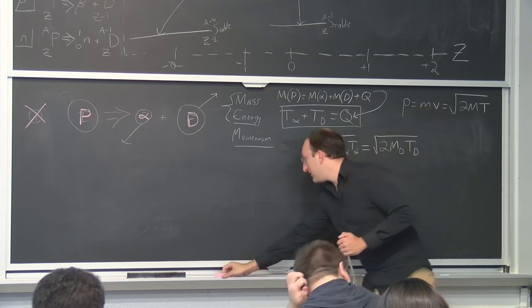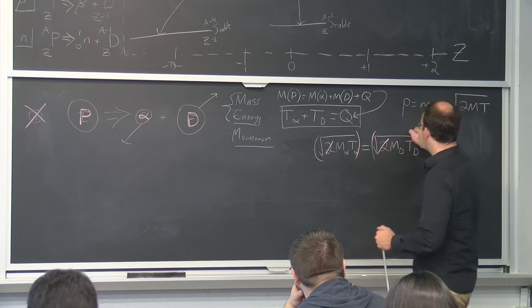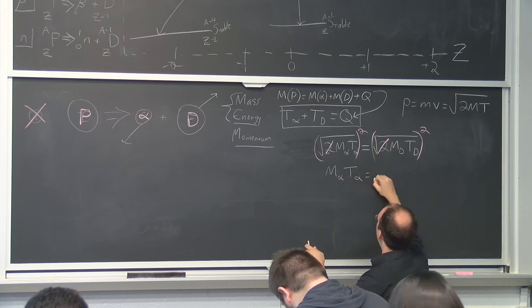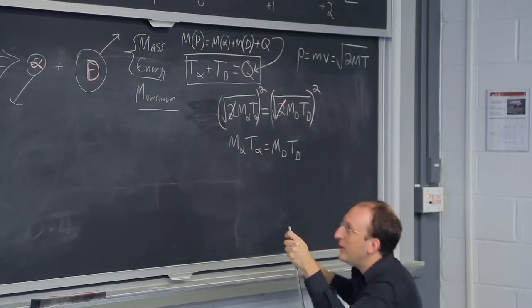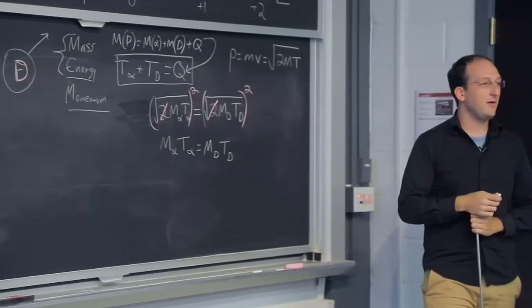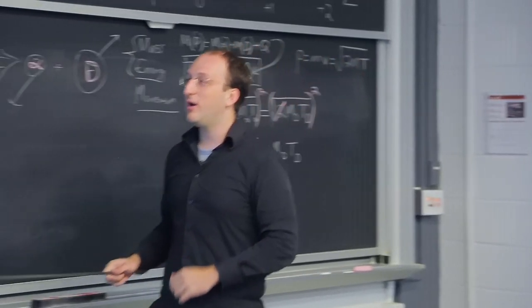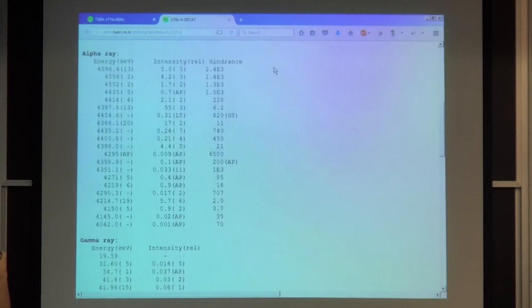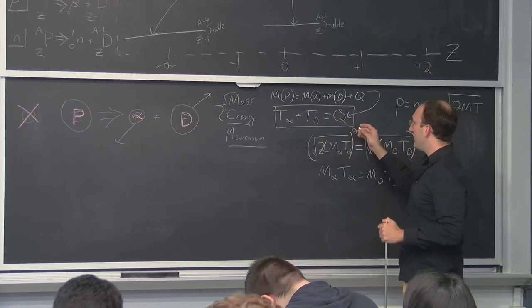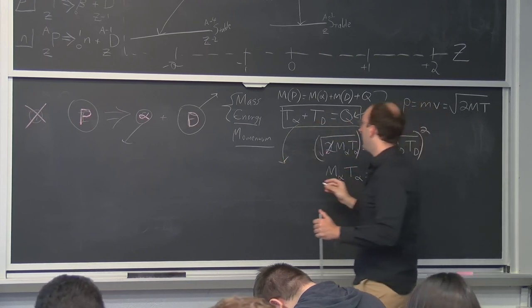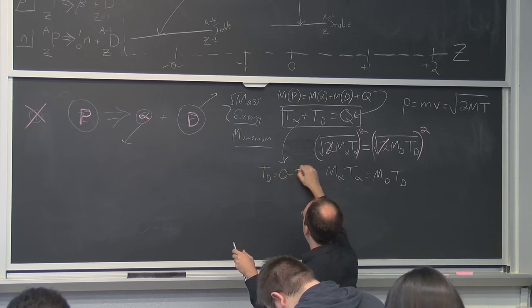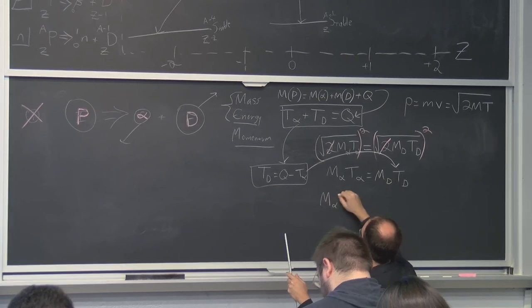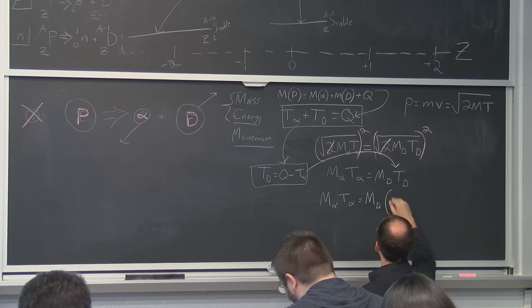This q value you can get by conserving mass, where we can say that the mass of the parent has to equal the mass of the alpha, plus the mass of the daughter, plus q. And now what are the momenta of the initial and final states? 0 equals the momentum of the alpha. What more convenient form contains the energy? Square root of 2 mt.